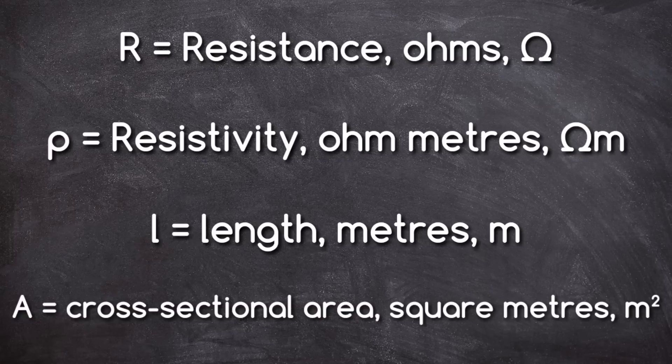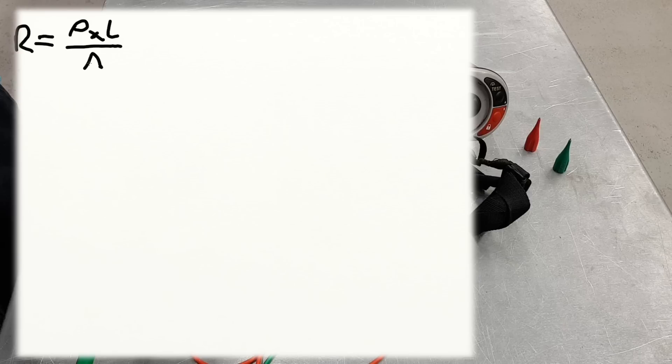So those are the four things that we're going to be playing around with in this calculation. For this calculation we're going to be using the formula: R is equal to rho times L divided by A. Now the resistivity of copper — rho for copper — is equal to 17.2. Notice this is important: micro ohm millimetres.